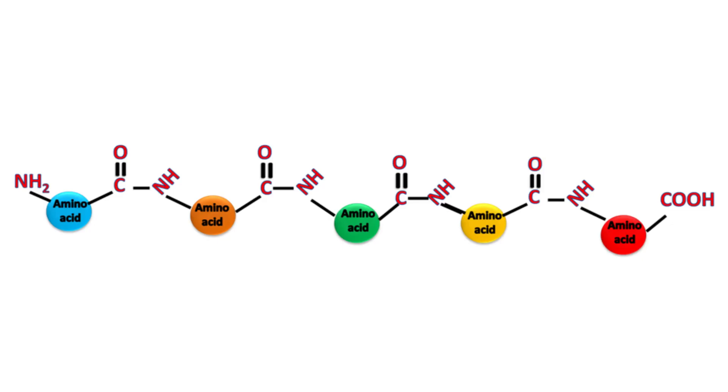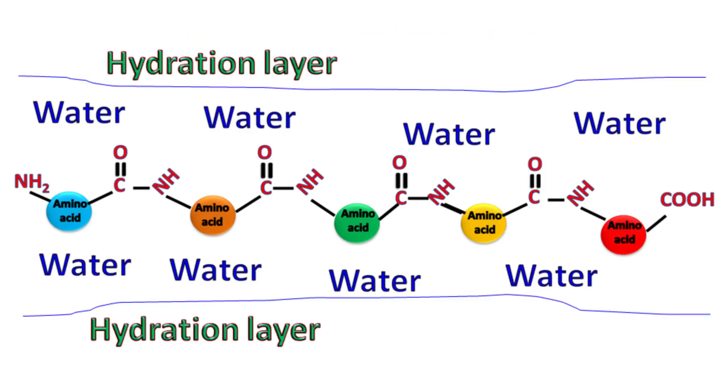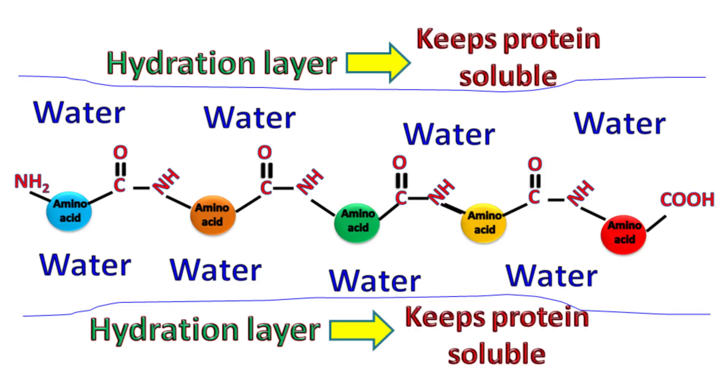Usually, protein molecules are surrounded by water molecules, which keeps them soluble. The layer of water molecules around the protein is known as the hydration layer. This layer keeps the protein in the soluble form.